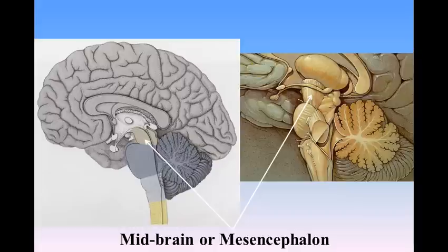It is directed upward and forward and consists of: 1. A ventrolateral portion composed of a pair of cylindrical bodies named the cerebral peduncles. 2. A dorsal portion consisting of four rounded eminences named the corpora quadrigemina. And 3. An intervening passage or tunnel, the cerebral aqueduct, which represents the original cavity of the midbrain and connects the third with the fourth ventricles.